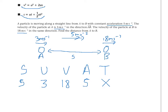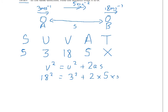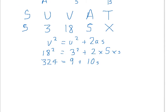We're going to have to rearrange this equation to make S the subject, but it's probably easier to write it down first and put in what we know. V squared equals U squared plus 2AS, so 18 squared equals 3 squared plus 2 times 5 times S. That gives 324 equals 9 plus 10S. Taking away 9 from both sides: 315 equals 10S. So S equals 31.5 metres.